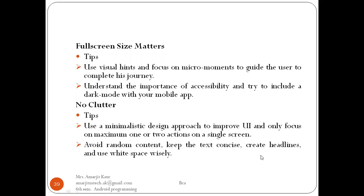Understand the importance of accessibility and try to include a dark mode in your mobile app. The next principle is no clutter. Clarity is essentially a characteristic of excellent mobile app design. A cluttered user interface has never yielded favorable results — elements like too many buttons or images only complicate usability and irritate customers. Say no to clutter and keep the design clean for improved visibility. Use a minimalistic design approach, focus on one or two actions per screen, avoid random content, keep text concise, create headlines and use white space widely.